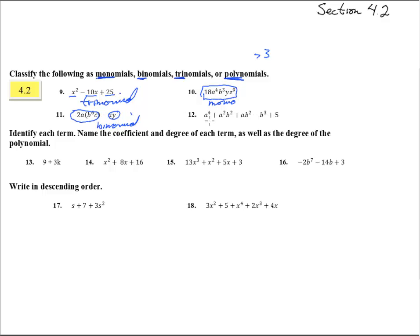And here's one, two, three, four, five terms — so that is just a polynomial. Can't call it any of the others, so it's just a polynomial.